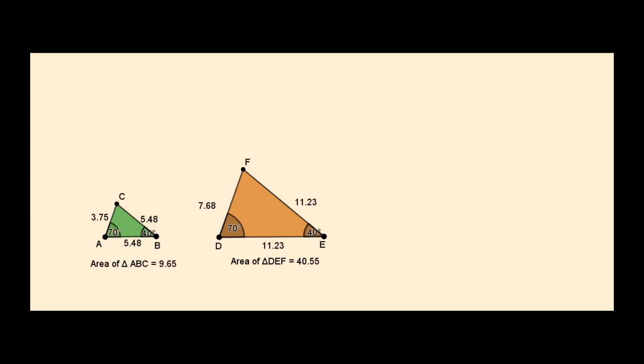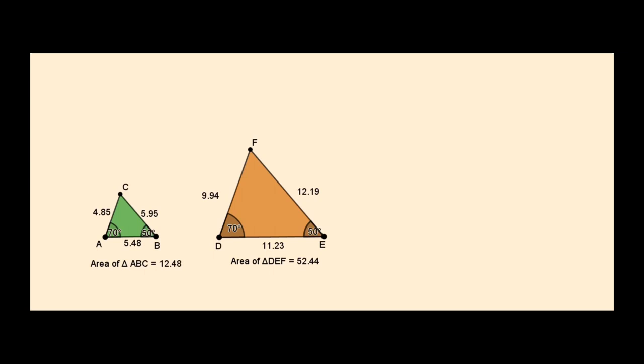I have two similar triangles. You can check whether these two triangles are similar by seeing the corresponding angles of the two triangles. According to AA criteria on similar triangles, if two angles of a triangle are equal to the corresponding angles of the other triangle, then those two triangles are similar.